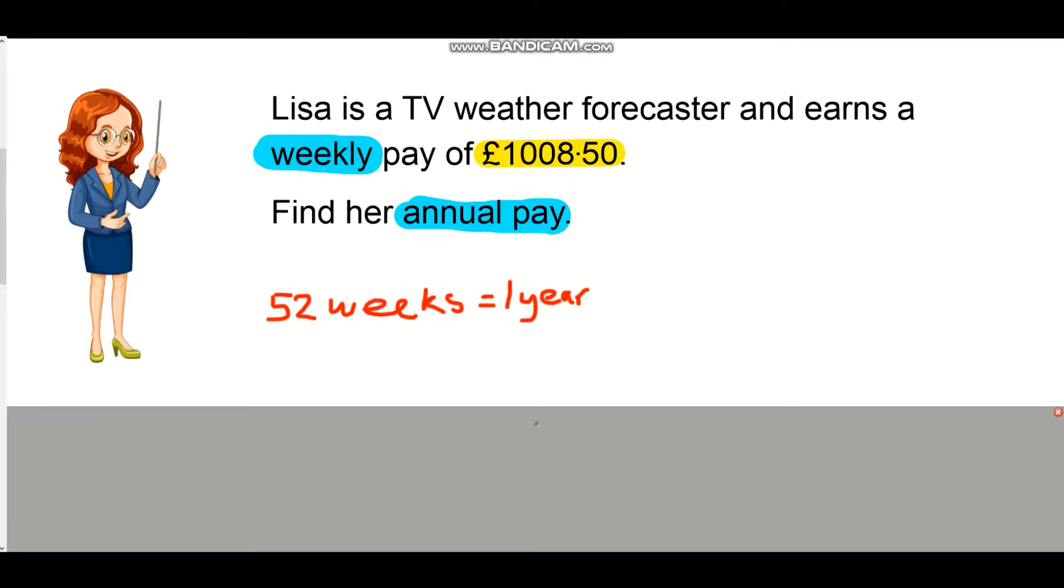The sum that we have to set up is £1,008.50 times by 52, and we get our final answer of £52,442. That's all we have to do to work out how much Lisa makes in one whole year.